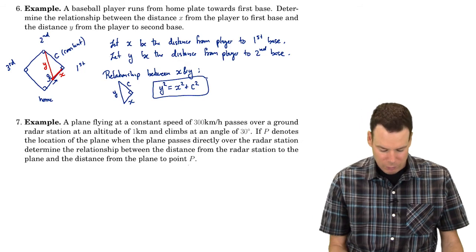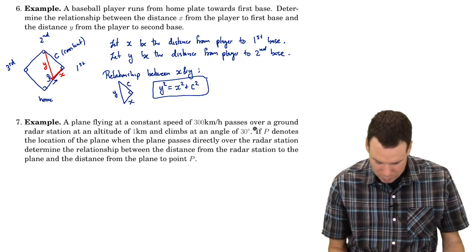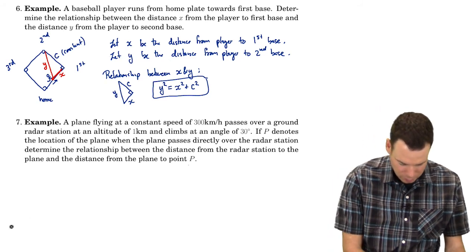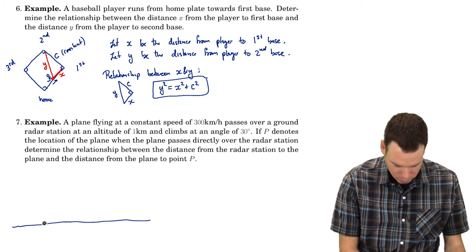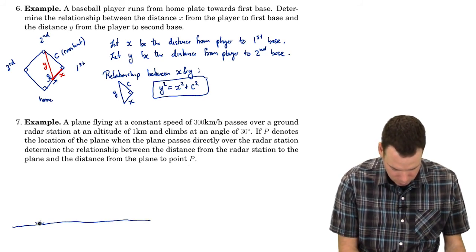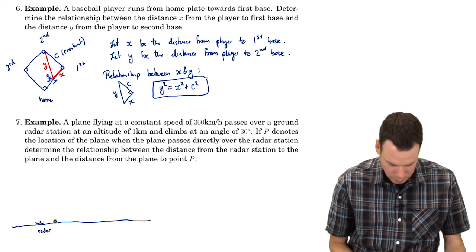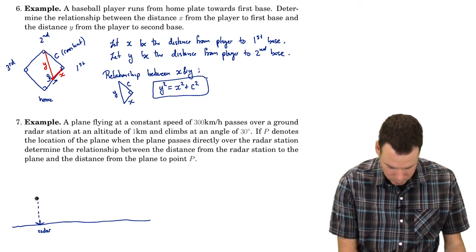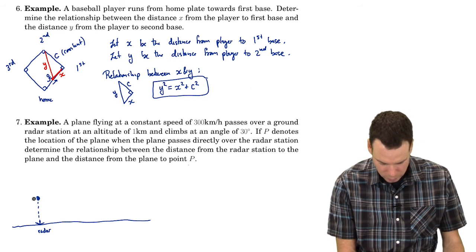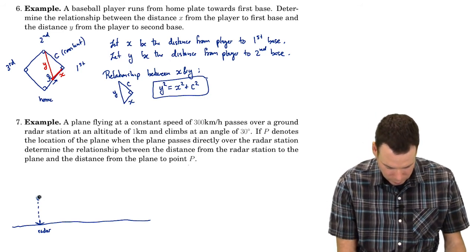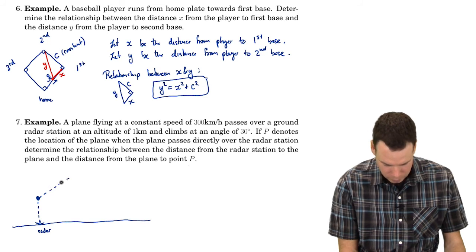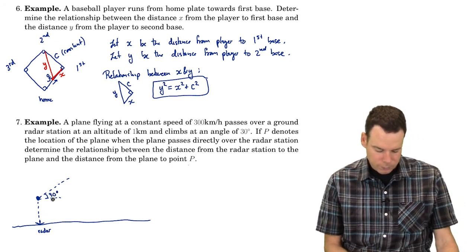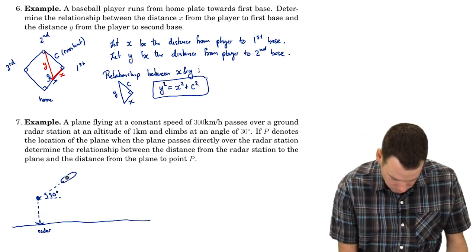Next example: a plane is flying at a constant speed of 300 kilometers per hour. It passes over a ground radar station at an altitude of 1 kilometer and climbs at an angle of 30 degrees. Here's the ground, the radar station, the point where the plane passes over it, and then it climbs at 30 degrees. So our plane is out here flying in that direction.